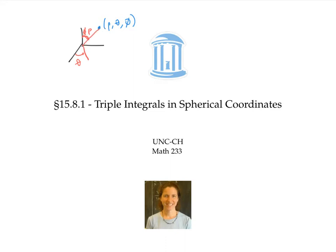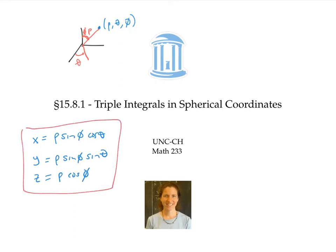Recall also that we can convert x, y, and z from Cartesian coordinates into spherical coordinates using the equations: x equals rho sine phi cosine theta, y equals rho sine phi sine theta, and z equals rho cosine phi. We'll be using these equations on the next page.